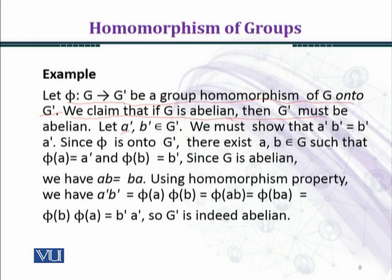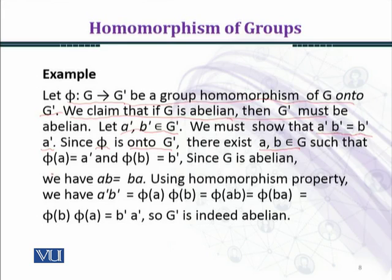Let a prime and b prime belong to G prime. We must show that a prime · b prime equals b prime · a prime, that is, the commutative property holds in G prime. Since phi is onto G prime, there exist a, b belonging to G such that phi(a) = a prime and phi(b) = b prime. Since phi is a homomorphism and also an onto map, every element of G prime has a preimage in G.